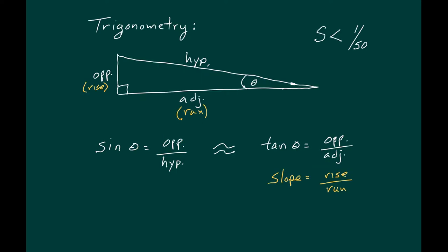When the slope is less than 1 in 50, the hypotenuse and the adjacent side are almost equal. So therefore the sine of theta which is opposite over hypotenuse is approximately equal to tangent theta which is opposite over adjacent which is the same as slope, rise over run.